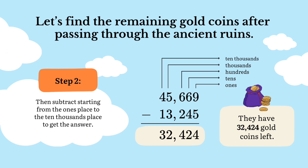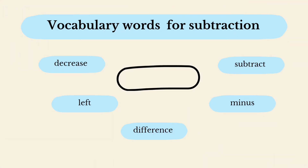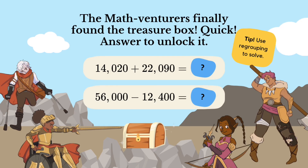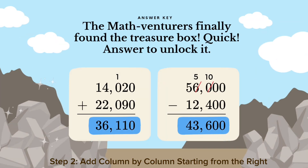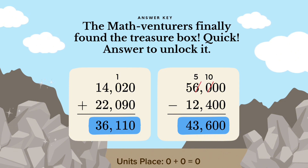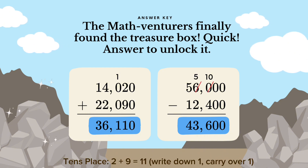Here are vocabulary words for subtraction. The math venturers finally found the treasure box — answer to unlock it! For the sum, step 1: write down the numbers. Step 2: add column by column starting from the right. Units place: 0 plus 0 is equal to 0. Tens place: 2 plus 9 is equal to 11 — write down 1, carry over 1.